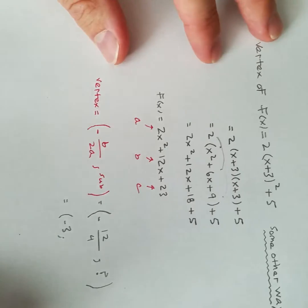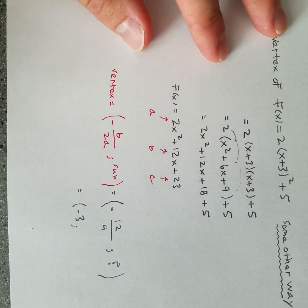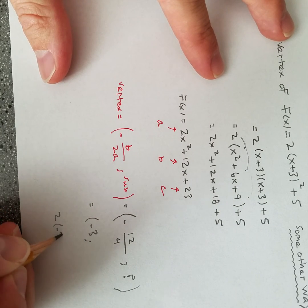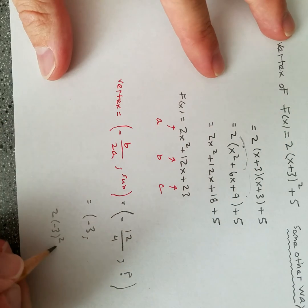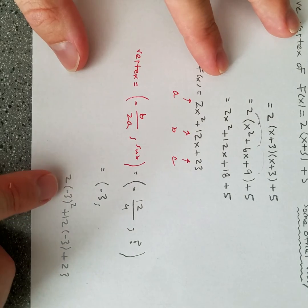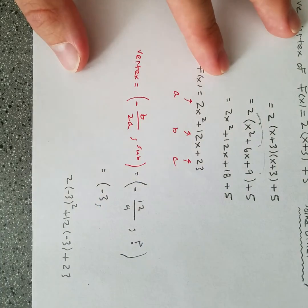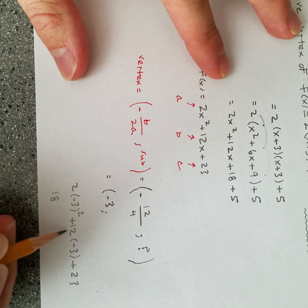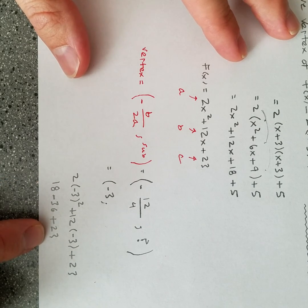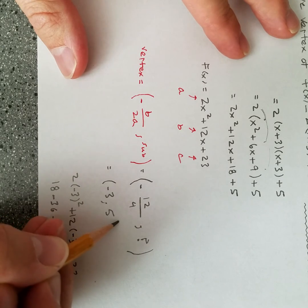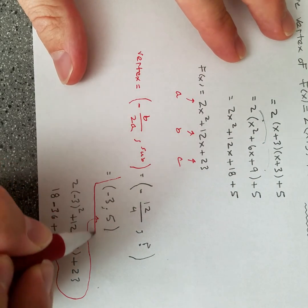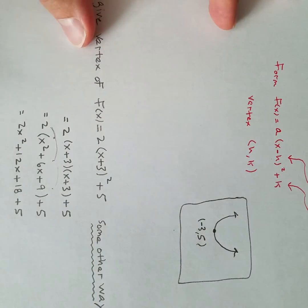Now what do we get if we plug negative 3 into the function? I take negative 3 for x and put it into everything: 2 times negative 3 squared, plus 12 times negative 3, plus 23. Negative 3 squared is 9; 9 times 2 is 18. Then negative 36 plus 23. Take 18 minus 36 plus 23 and that turns out to be 5. That is confirmation of the answer we got before.